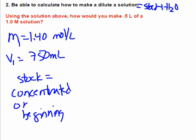So this is where I use M1 times V1 equals M2 times V2. And I've got my M1 and my V1, 1.4 mole. And it's moles per liter.